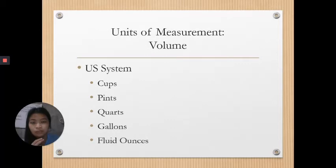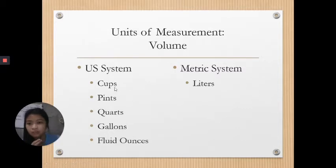For the units of measurement in terms of volume, we have the difference between the US system and the metric system. In the US system, we have different units of measure: cups, pints, quarts, gallons, and fluid ounces. In the metric system, we only have one standard unit and we use liters.